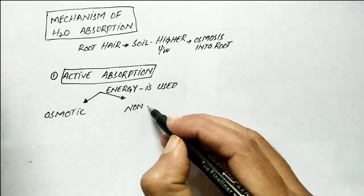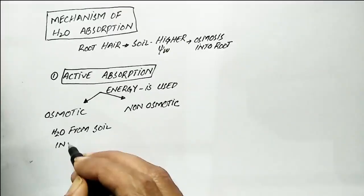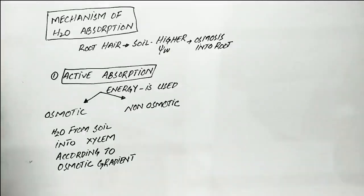Osmotic absorption, when water is absorbed from the soil into the xylem of the root according to the osmotic gradient. And the second one is non-osmotic absorption.